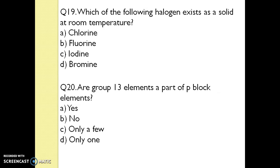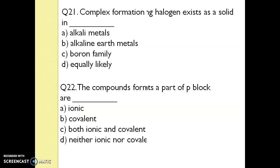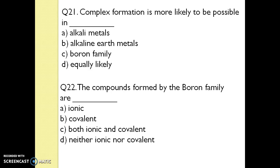Question 19. Which of the following halogens exists as a solid at room temperature? The answer is fluorine. Question 20. Are Group 13 elements a part of P-block elements? Yes. Question 21. Complex formation is more likely to be possible in which family? The answer is the boron family.